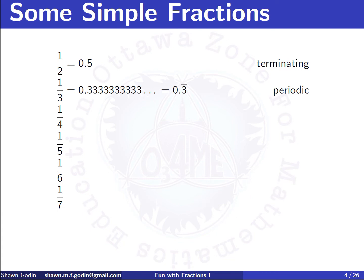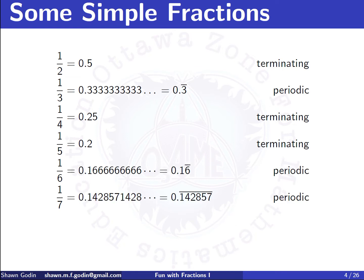Continuing on, the next two fractions are terminating — those should be well known. The next two are periodic. One seventh becomes a little bit interesting because now I've got something with quite a long period. It goes 142857 — that's called the repetend, the part that repeats — and we'd say this is periodic with period six, because there are six digits being repeated in the decimal.